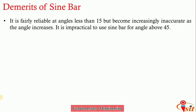The demerits of the sine bar include: the establishment of an angle by the sine principle is essentially a length-measuring process, so accuracy is limited by the measurement of the center distance between the two precision rollers. Measuring the exact effective center distance to a fraction of a micrometer is an infinitely complex problem, and any small error in this measurement can generate a larger angular error.